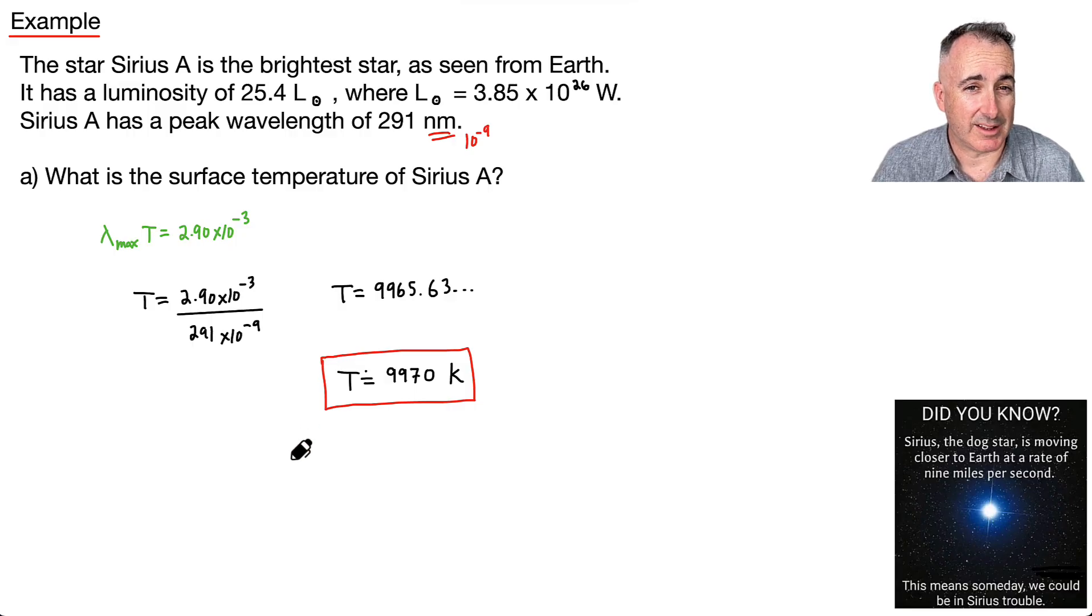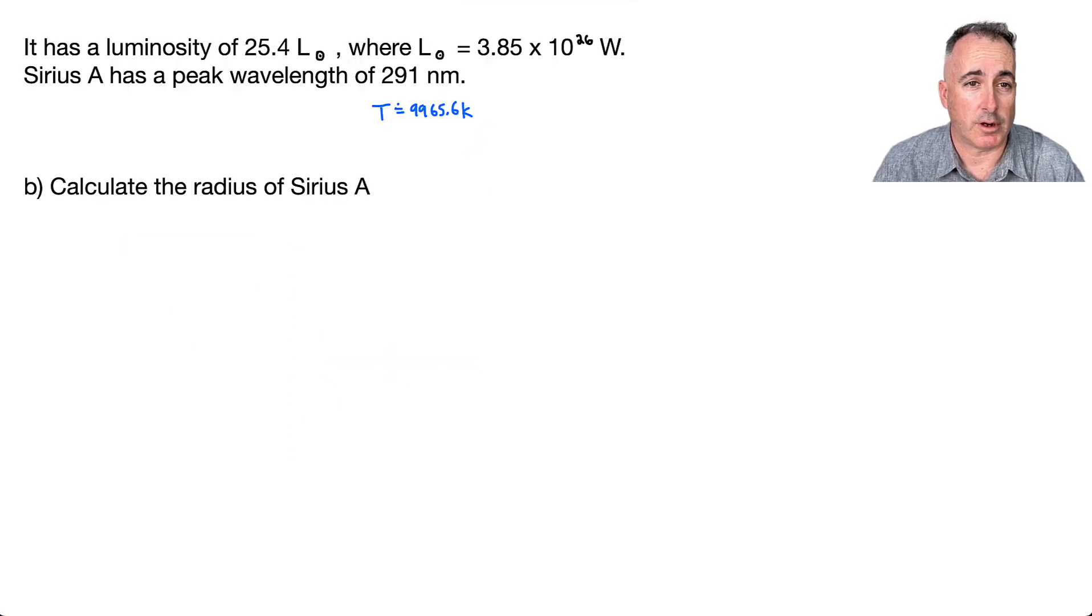So surface temperature is going to be around 9970 Kelvin. Now, if I'm doing any calculations, I want to keep all of my decimals on my calculator. So I'm going to use the full version here if I need to. For part B, I'm using some other data. By the way, I did find this from part A. That's why I just wrote it down again.